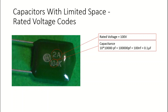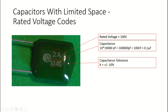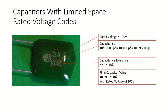Going back to the capacitance, the code '104' means '10' are the first two digits and then four zeros - multiplied by 10,000. Remember, for capacitors without units given, they're understood to be in picofarads. So 10 times 10,000 gives us 100,000 picofarads, equal to 100 nanofarads or 0.1 microfarads. This capacitor also has the value 'K', which from our previous code gives a capacitance tolerance of plus or minus 10%. So the final value for this capacitor is 100 nanofarads with a tolerance of plus or minus 10% and a rated voltage of 100 volts.